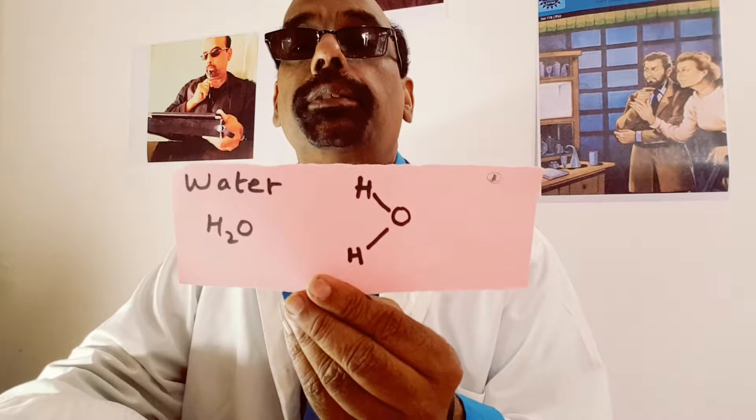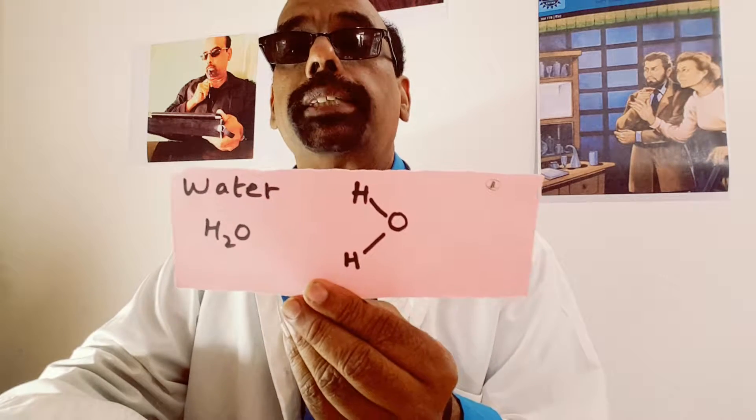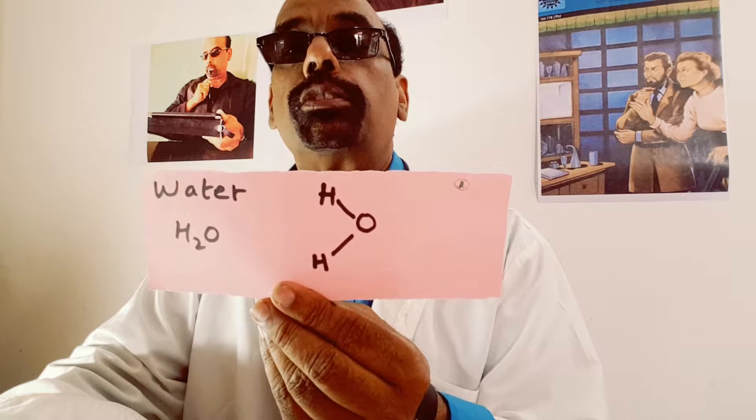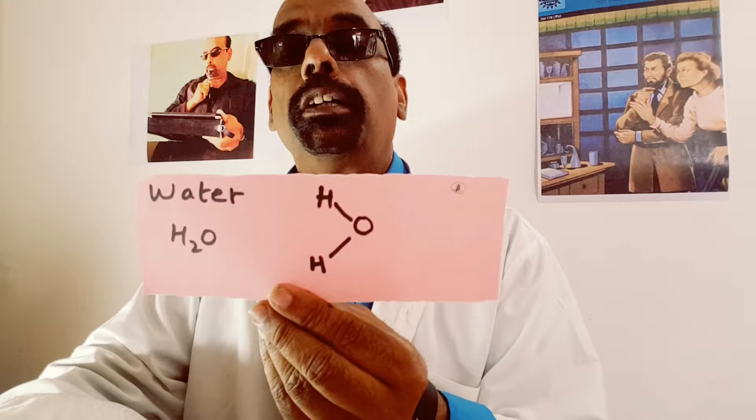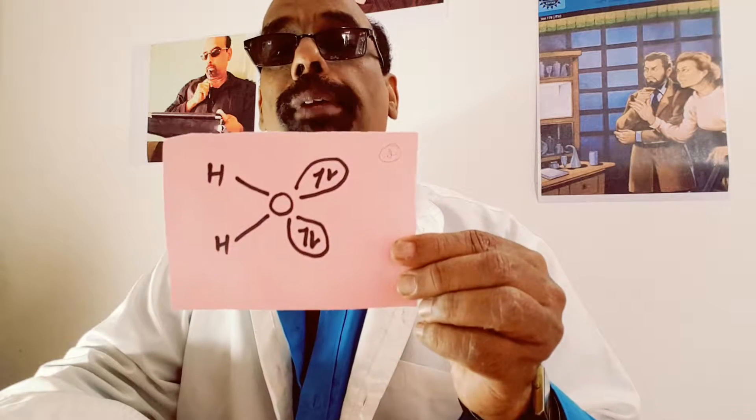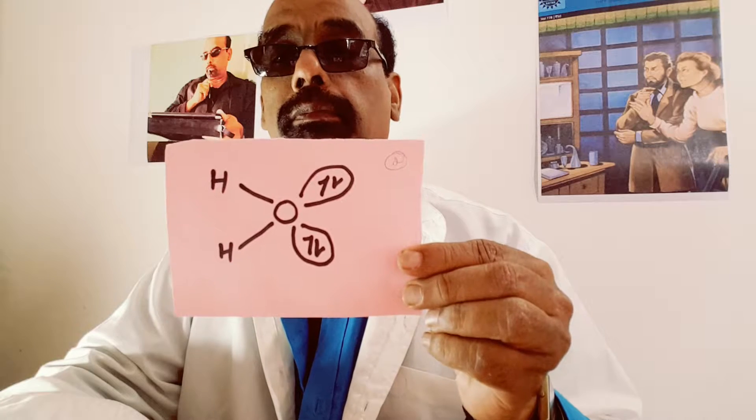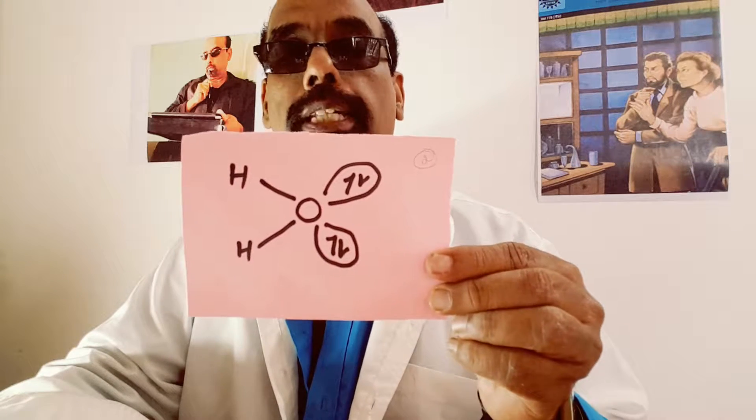A molecule is made up of atoms covalently bonded together by sharing of electrons. Water is a molecule — its formula is H₂O. It has two hydrogen atoms bonded to one oxygen atom. Water possesses two lone pairs of electrons and two bonded pairs of electrons.